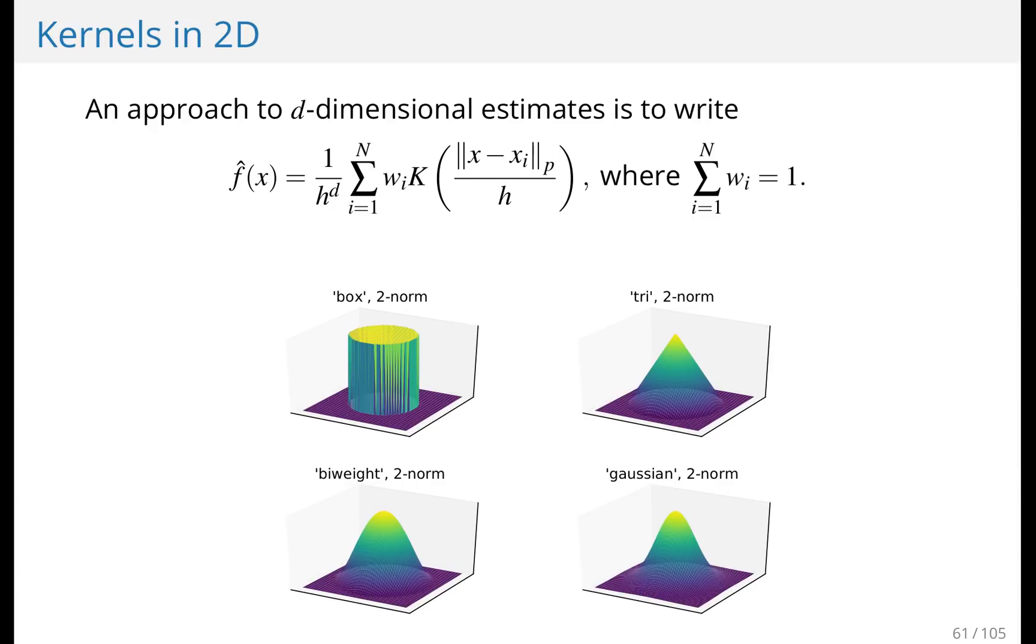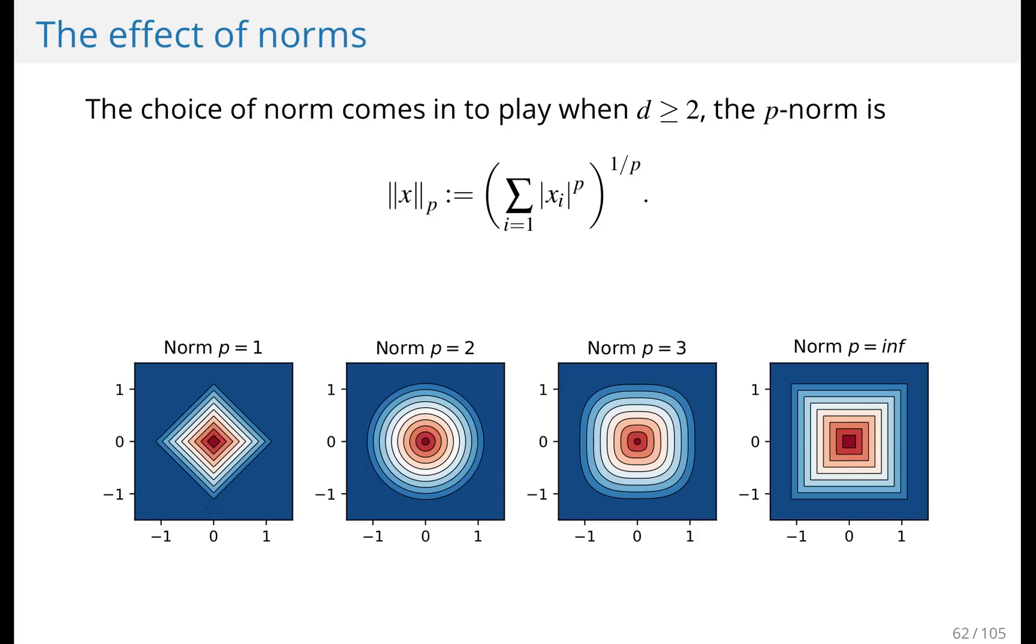So here you see four kernels in two dimensions: the box kernel, the triangular kernel, the biweight kernel, and the Gaussian kernel. The choice of norm really matters in higher dimensions, because you're allowed to pick a norm. And it's not obvious in every case which norm is the correct one. Typically, P equals two in the P norm, which corresponds to standard Euclidean distance, is a good choice because it's invariant under rotation. But there are other choices as well.